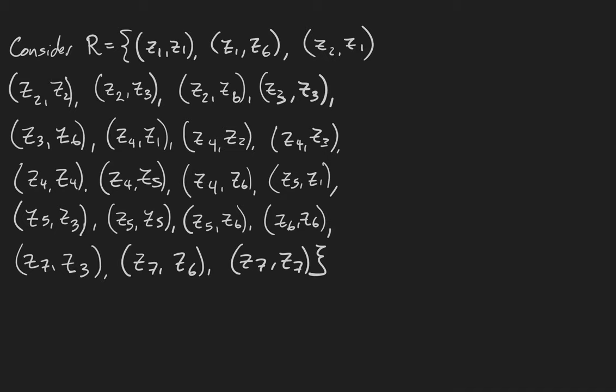Here's how you draw a partial order when you're just given a set of pairs. The lower elements in the partial order are going to be the ones that are related to the most other things. That's going to be z4, because in our relation z4 is related to everybody.